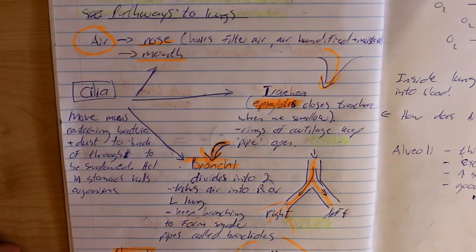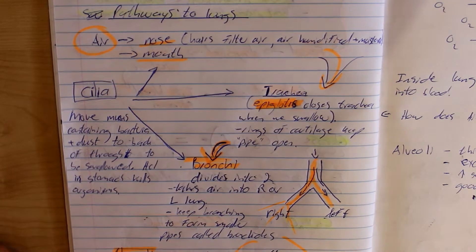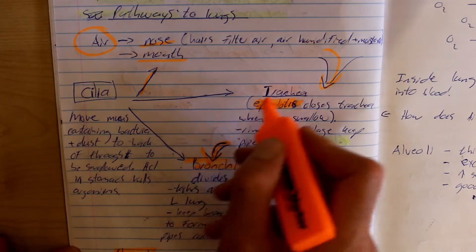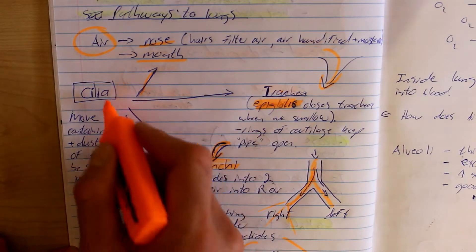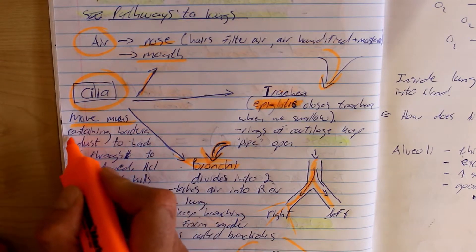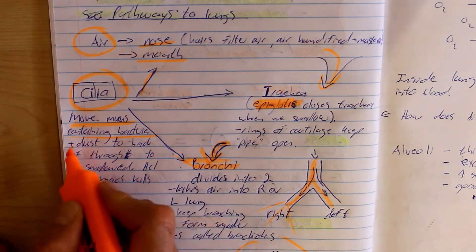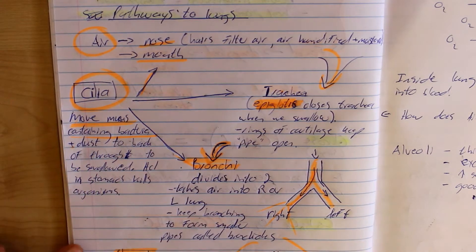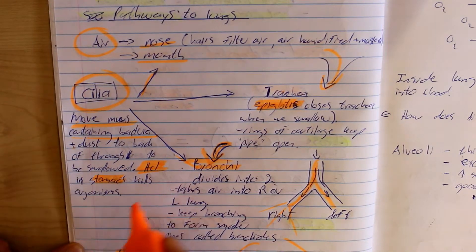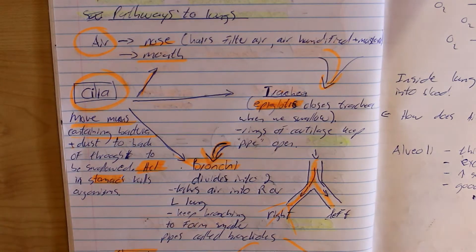The bronchioles eventually form alveoli. The alveolus is a tiny air sac at the end of a bronchiole. The nose, trachea and bronchi all contain cilia, which move mucus containing bacteria and dust to the back of the throat to be swallowed. Hydrochloric acid in the stomach kills the organisms and prevents you from getting sick.